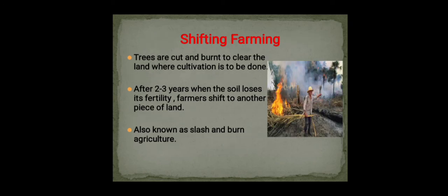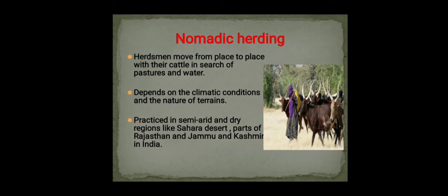Shifting cultivation is a farming technique wherein trees are cut and burnt to clear the land. After two to three years, when the soil loses its fertility, farmers shift to another piece of land. It is also known as slash and burn agriculture. The ashes of the burnt trees remain, helping retain some fertility.